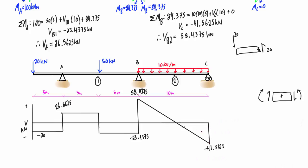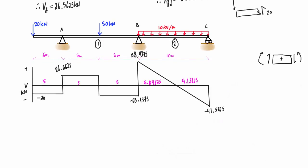Adding labels: the overhang is 5 m, span A–B is 5 m, and span B–C is 10 m. The zero-crossing in span B–C splits it into two triangles. Using similar triangles, the left portion is 5.84375 m and the right portion is 4.15625 m.